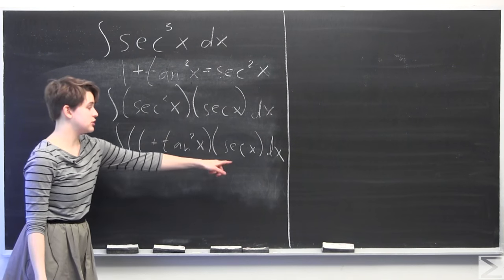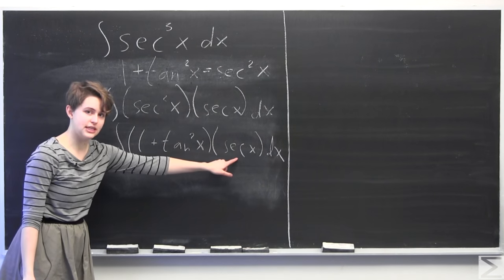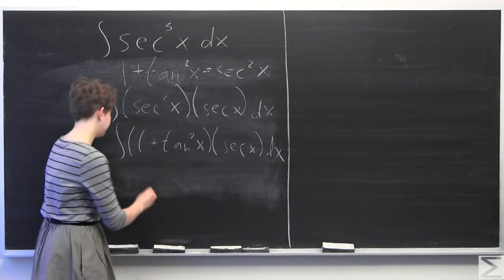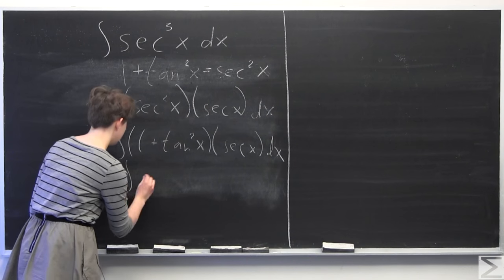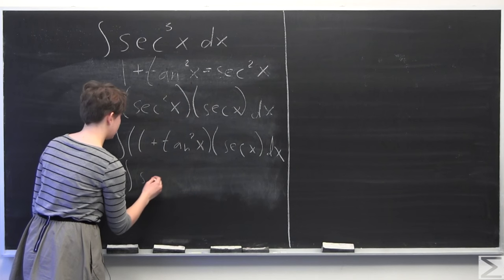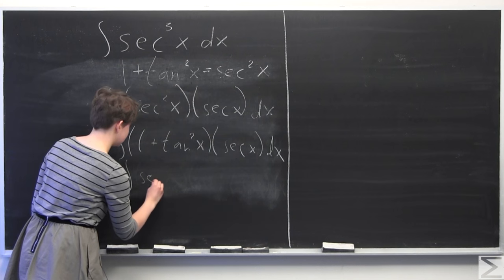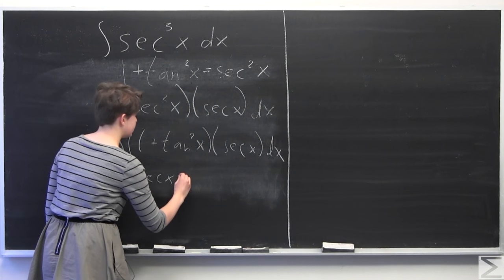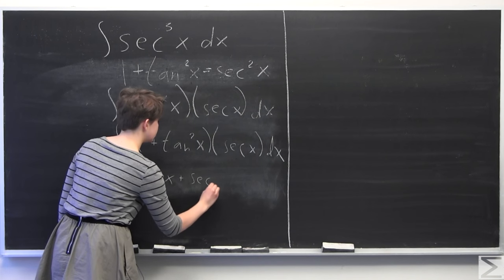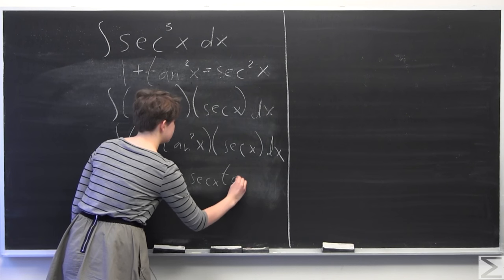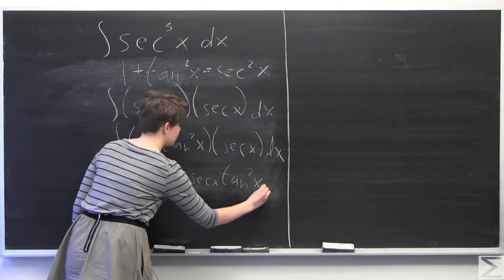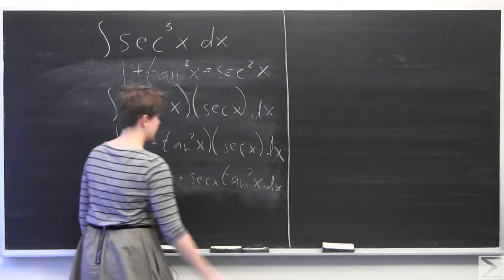Now I'm just going to distribute the secant of x over to the 1 and over to the tangent squared of x. So we're left with secant of x plus secant of x times tangent squared of x, dx.